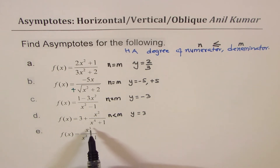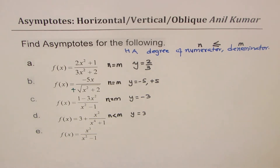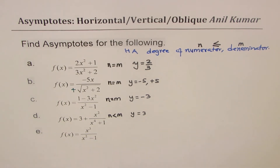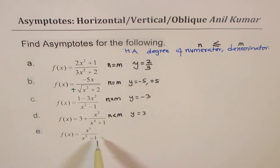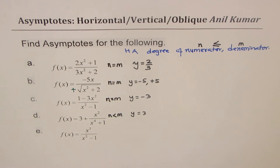The last case is y equals x cubed over x squared minus 1. Here we do not have any horizontal asymptote — instead we expect an oblique asymptote. To find the equation of the oblique asymptote, we divide the numerator by the denominator, and we will get a linear equation that will be the equation for the asymptote.